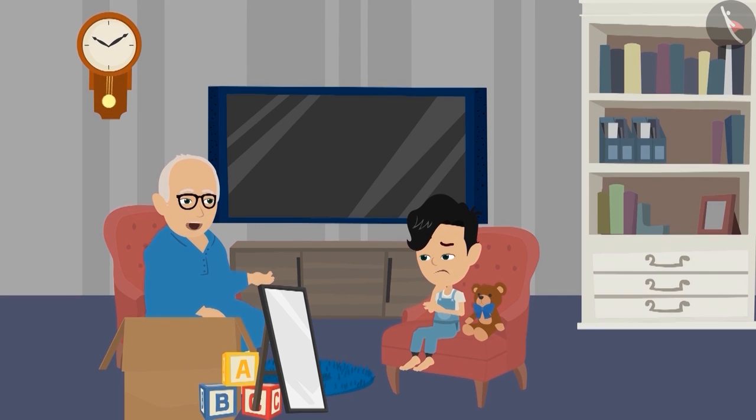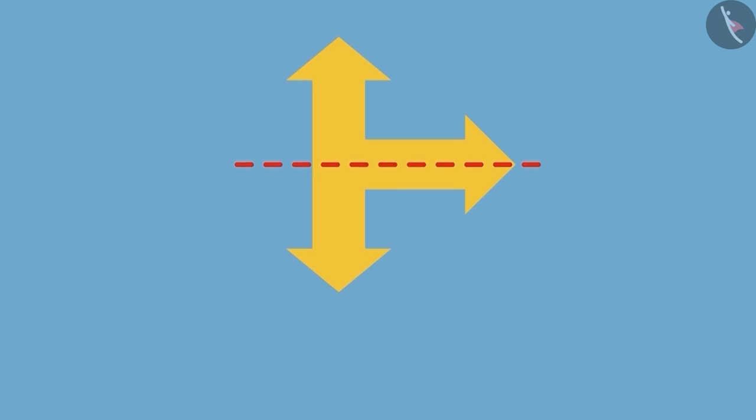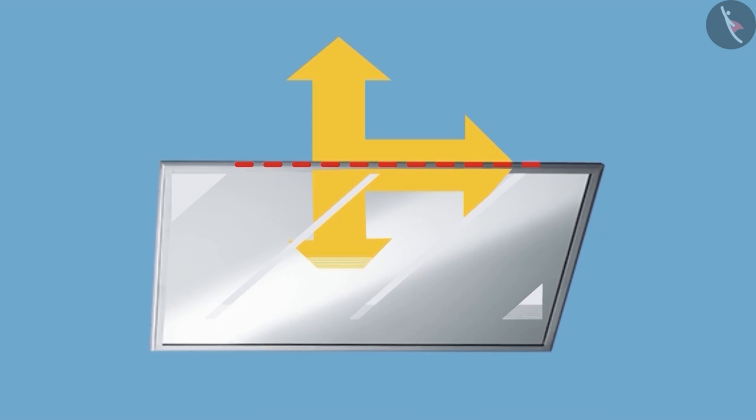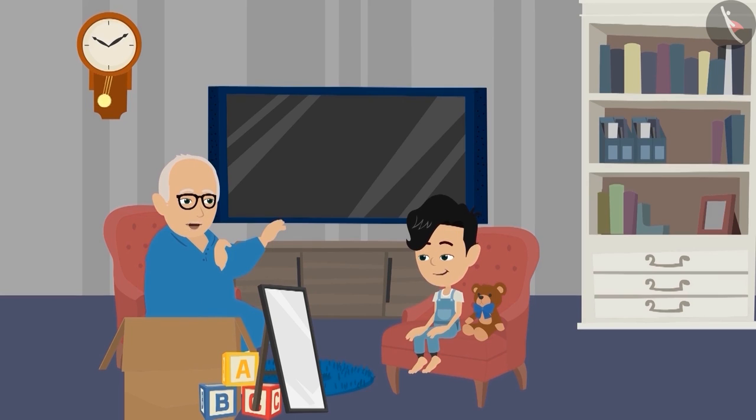Because Pinku, you drew the wrong dotted line. The correct dotted line will look something like this. Take this Pinku, now you see it in the mirror. Yes Dadaji, now it is divided into two equal halves. Pinku, always keep in mind that there is a different dotted line for every image.